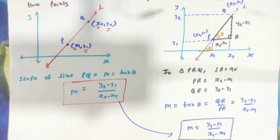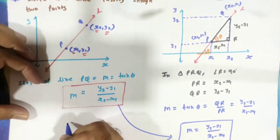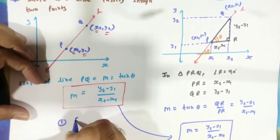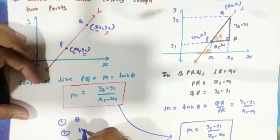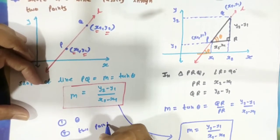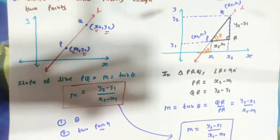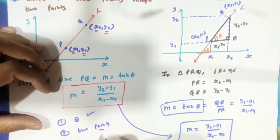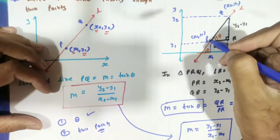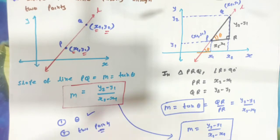So this is how you can find the slope of the line. Two methods are there: first case, when inclination theta is given — M = tan(theta); second case, two points through which the line is passing — M = (y2 − y1) / (x2 − x1).